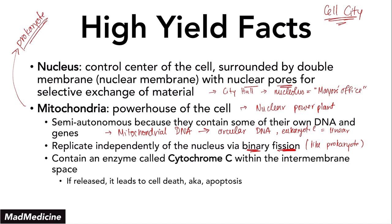Mitochondria also contain an enzyme called cytochrome C within the intermembrane space. If cytochrome C is released — for example, through damage to the mitochondria — the cell will go through a process called apoptosis, aka cell death, also called programmed cell death. Programmed would mean the cell was told to die off. Unprogrammed would be that some damage occurred to the mitochondria, causing cytochrome C to be released into the cytoplasm, inducing cell death. That's why mitochondria is so important, other than being the powerhouse of the cell.